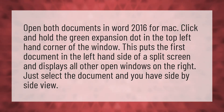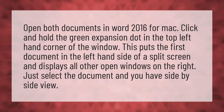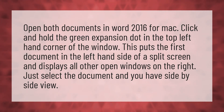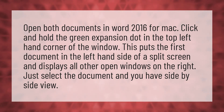Open both documents in Word 2016 for Mac. Click and hold the green expansion dot in the top left hand corner of the window. This puts the first document in the left hand side of a split screen and displays all other open windows on the right. Just select the document and you have side by side view.